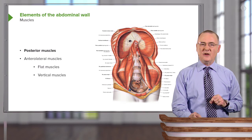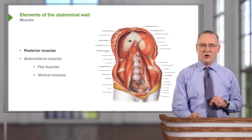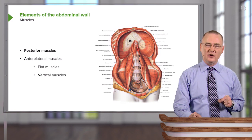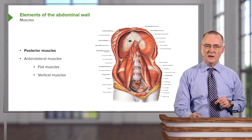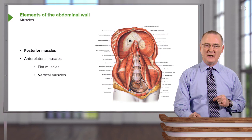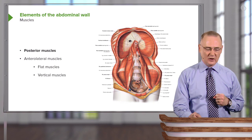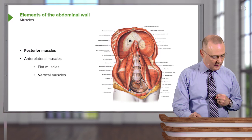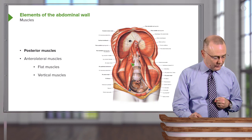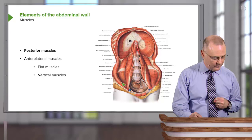That then brings us to the muscle elements of the wall, where we'll have posterior muscles and anterolateral muscles, arranged as flat muscles and vertical muscles. Our posterior wall muscles are shown in through this area and also on the opposite side.